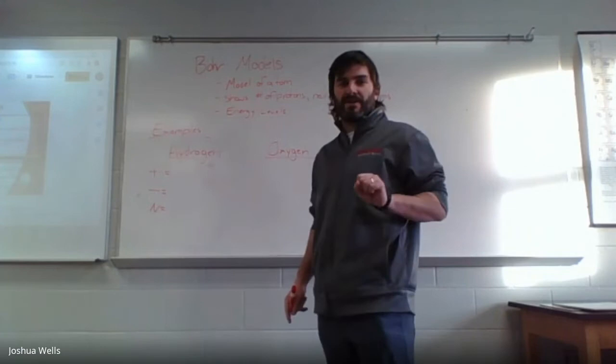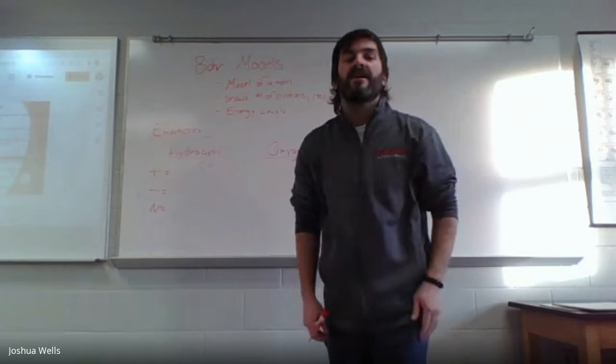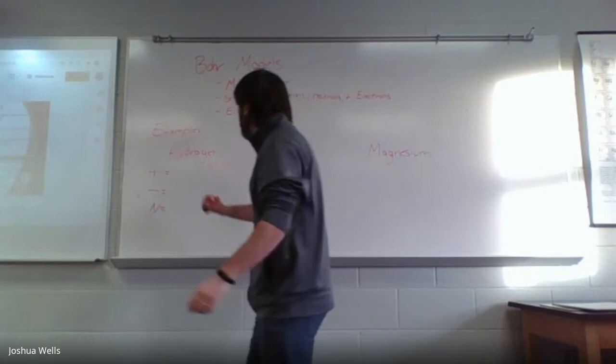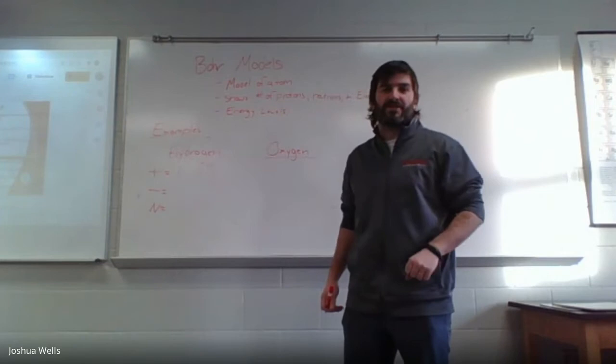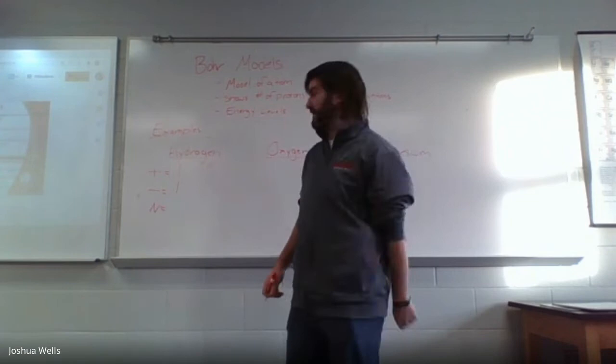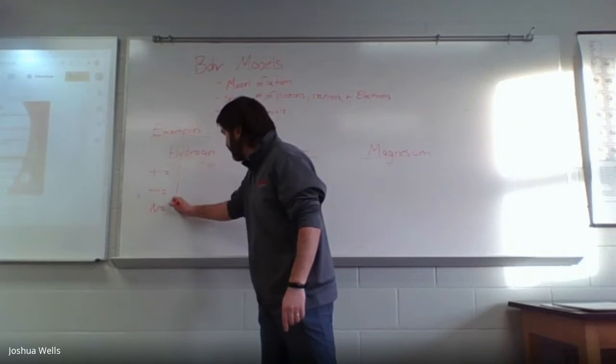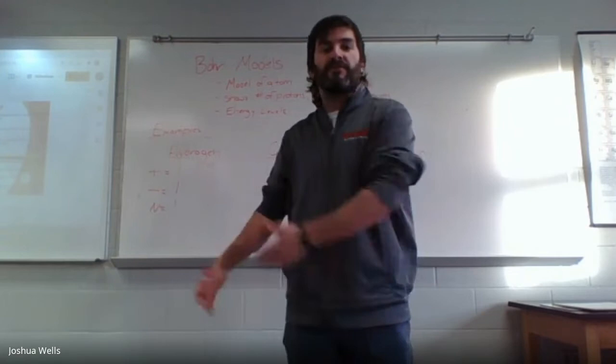On the periodic table, you will look for the atomic number and the element's name. In this case, we're looking for hydrogen. Hydrogen is atomic number one. Atomic number is the number of protons in the nucleus — that is the only thing it means. So if I have atomic number one, my proton number is one. The number of electrons for hydrogen will also be one because I have one proton, I should have one electron, and I'm also going to have one neutron.